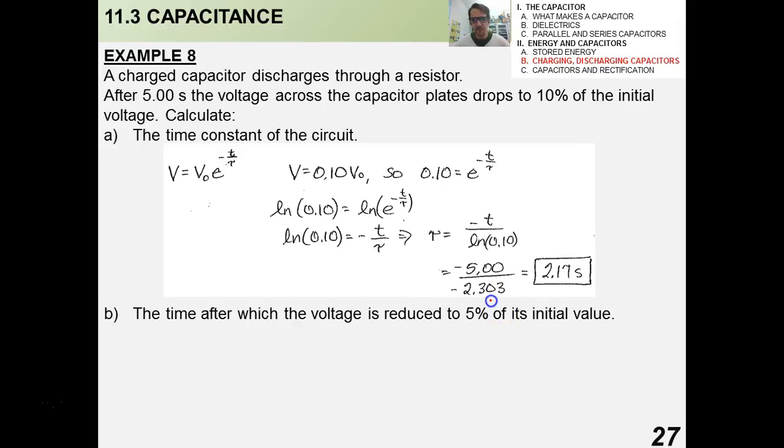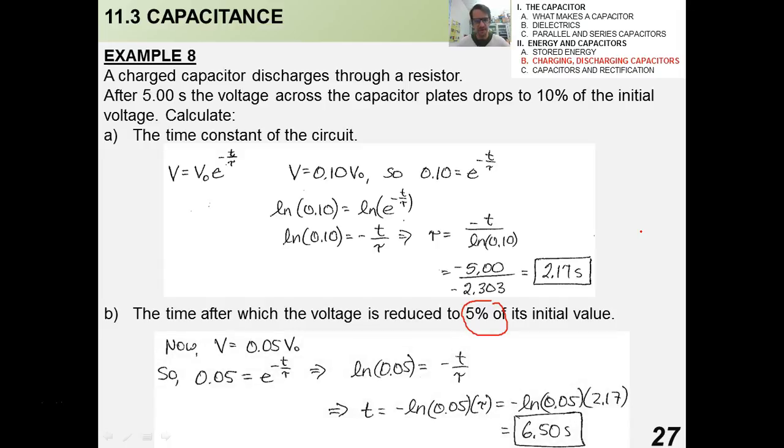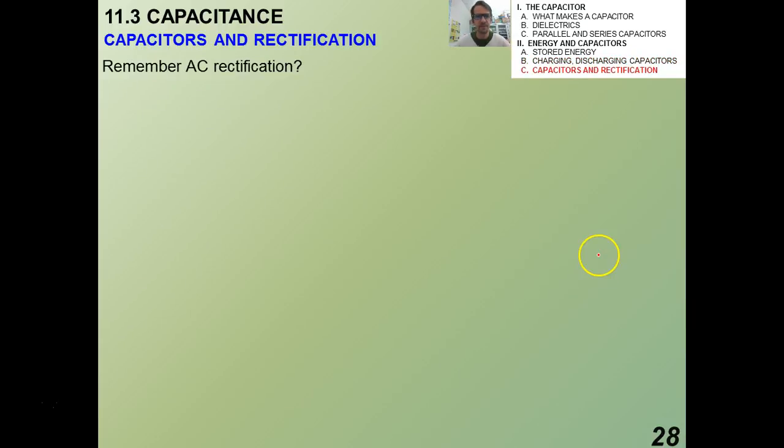Well, you know that V of T is V naught E to the negative T over tau. What you want is for V to be 0.10 of V naught, because that's 10%. So, we have 0.10 equals E to the negative T over tau. I take logarithms of both sides. That's the only way that I can extract that time constant tau. And I get that tau is 2.17 seconds. Remember, tau gives us an idea of how quickly a capacitor charges or discharges. How about the time after which the voltage is reduced to 5% of its initial value? Now, here you have to be careful in terms of interpreting the question. And the way the English words are phrased is very, very important here. So, now V equals 0.05 V naught. You would not use 0.95, right? I've seen students make that mistake. Do the same thing here. And now you're solving for T. The only way to get T out of that is to take the natural log of both sides. And I get that T is 6.5 seconds. So, after 6.5 seconds, the voltage is reduced to 5% of its initial value. And that's how we do it.